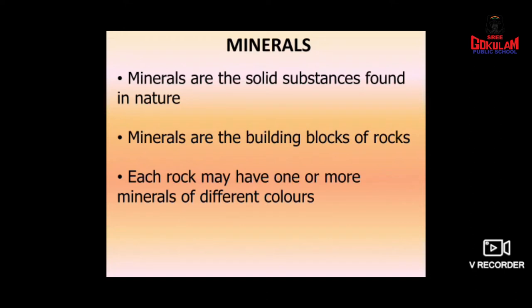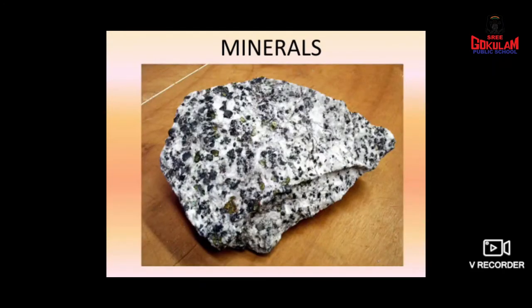I will show you some colored minerals in this rock. This is a type of rock. Can you see some types of colors here? Which colors are present? Yes, black, then white, then gray color. So the different colored things you can see are called minerals. This rock is made up of minerals with different colors — black, white, and gray.